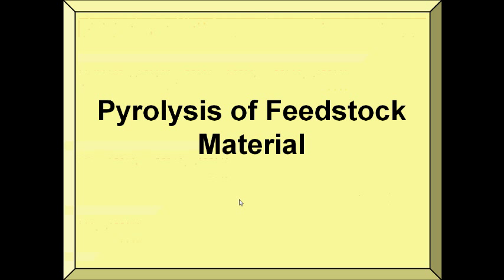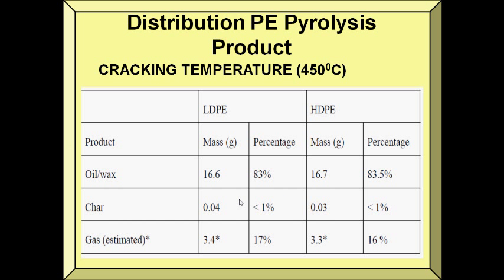Now let's proceed to the pyrolysis of feedstock materials. First is polyethylene pyrolysis. The cracking temperature for polyethylene is 450 degrees Celsius. In the table, you can see that the product yield for low-density polyethylene and high-density polyethylene is almost the same — the oil or wax yield is 16.6 grams for LDPE and 16.7 grams for HDPE, with almost the same char yield and gas yield.